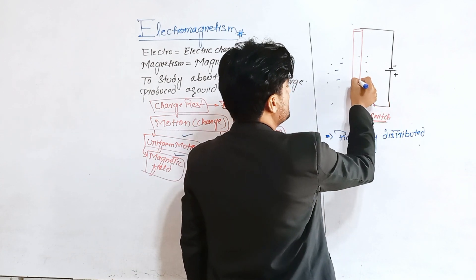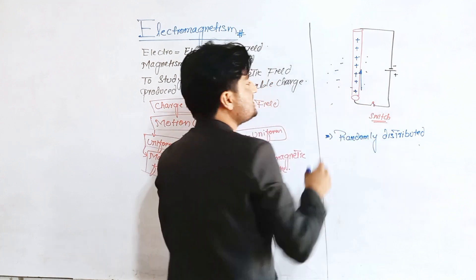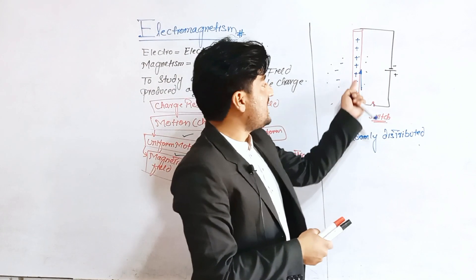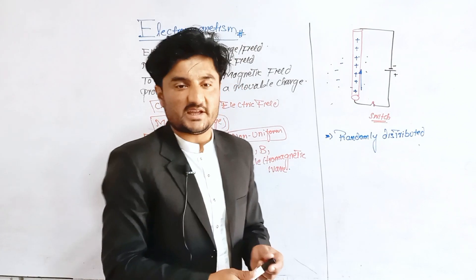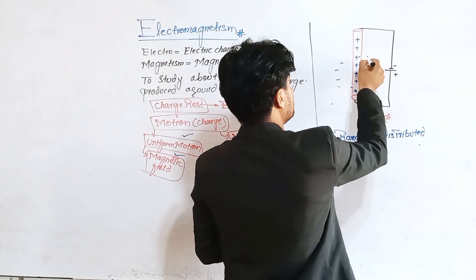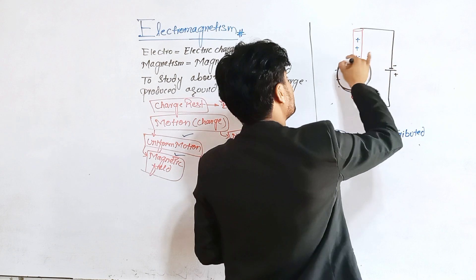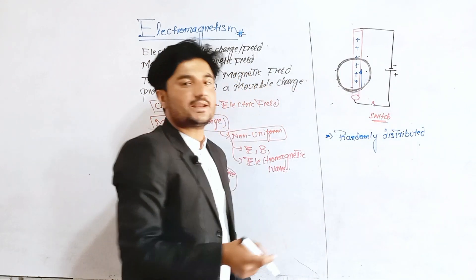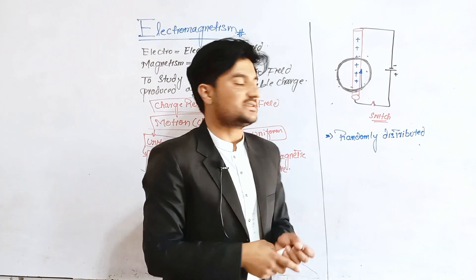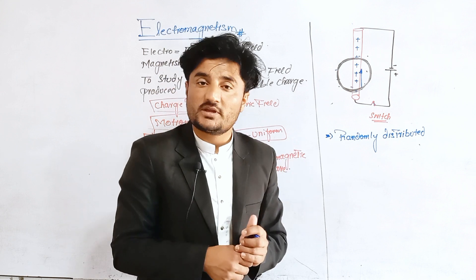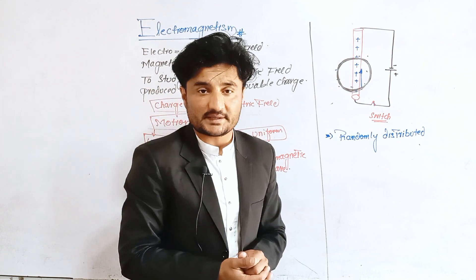When we close the switch, the positive charges — conventional current — start moving upward. As these positive charges begin to move, a magnetic field is produced around them. You know that a magnet or magnetic field attracts iron pieces. So around the wire, the iron filings become arranged in a proper pattern, which is evidence that when charges move in this wire, a magnetic field is produced around it, arranging the iron filings in a circle.